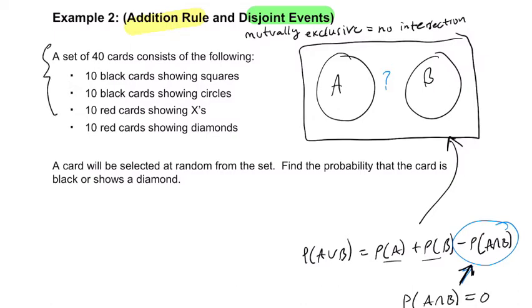There's a set of 40 cards and these 40 cards have five properties: 10 black cards have squares on them, 10 black cards show circles, so I'm going to draw that - square, circle. 10 showing X, 10 red ones showing X's. Let me switch over to red: 10 red X's and 10 diamonds. That's a diamond. A card will be selected at random from the set. Find the probability that the card is black or shows a diamond.